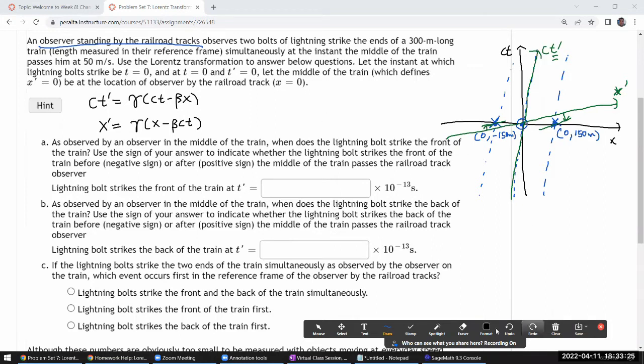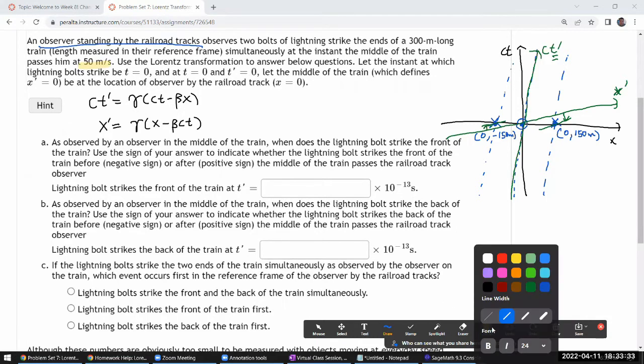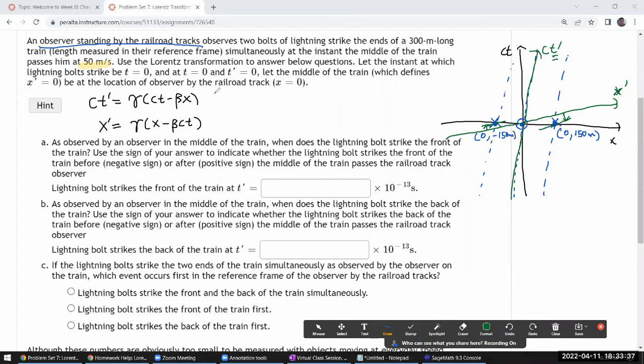Now because in this question the numbers are given in a very non-relativistic way, let me rewrite these equations a little bit to make it easier for me to plug in the numbers. So in the first equation I'm going to divide out the c so that it'll be t prime is equal to gamma times t minus v times x divided by c squared. In my second equation I'll just plug in beta is equal to v over c. So it'll be gamma times x minus v times t.